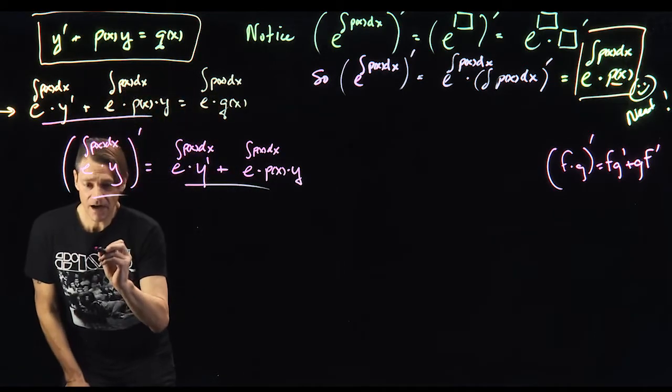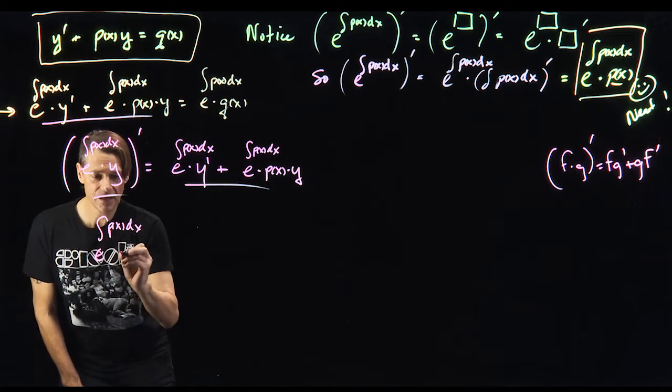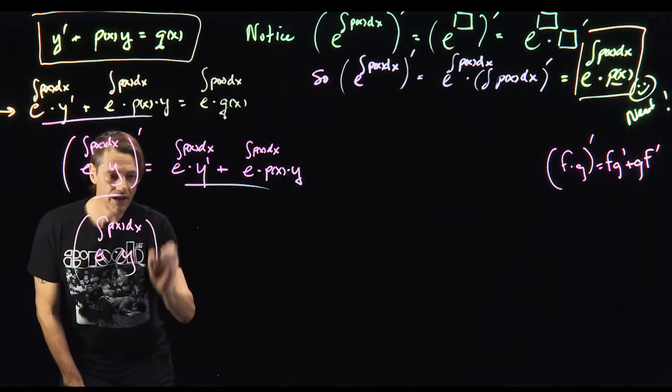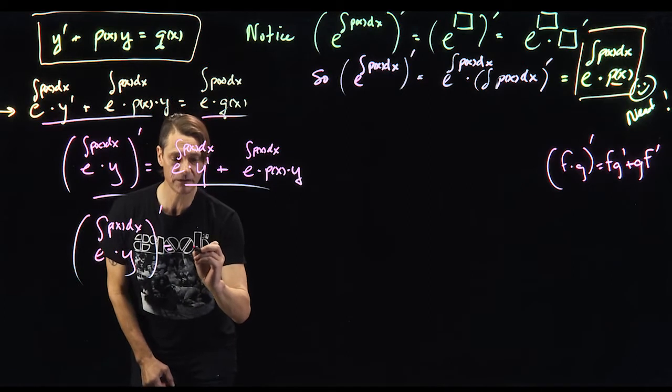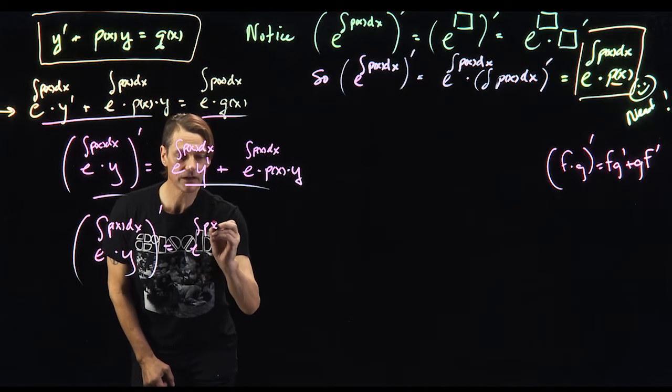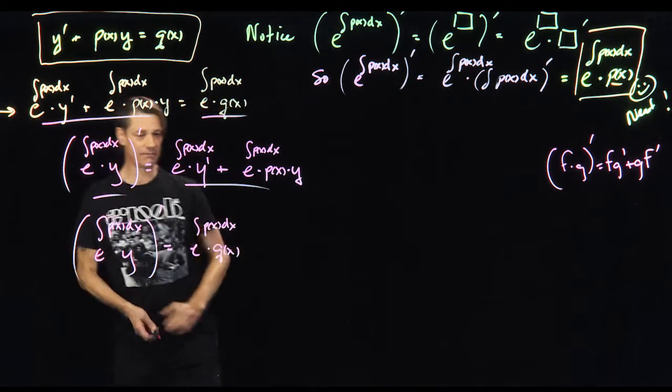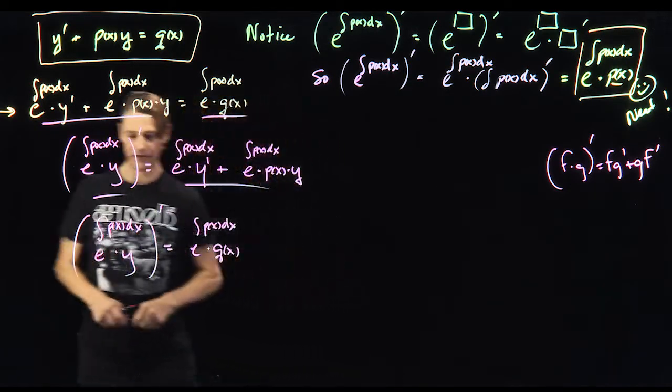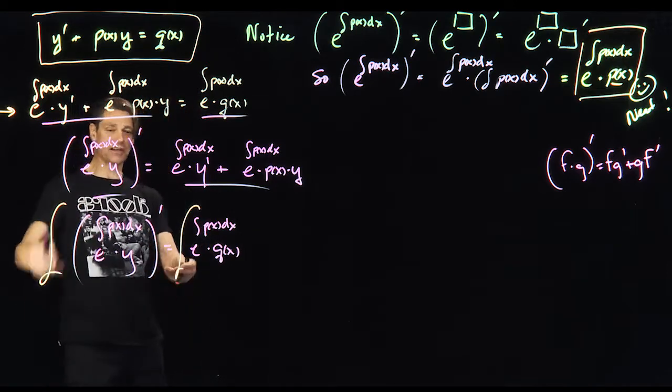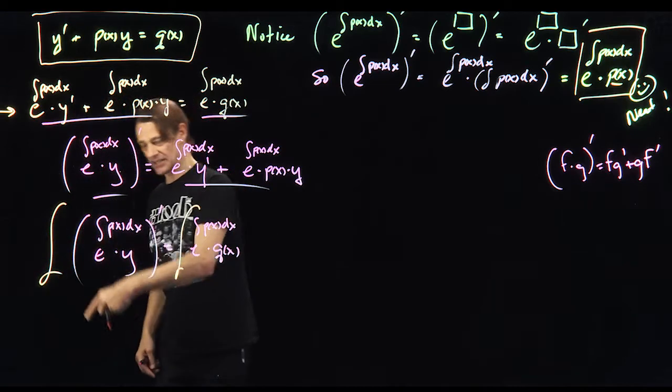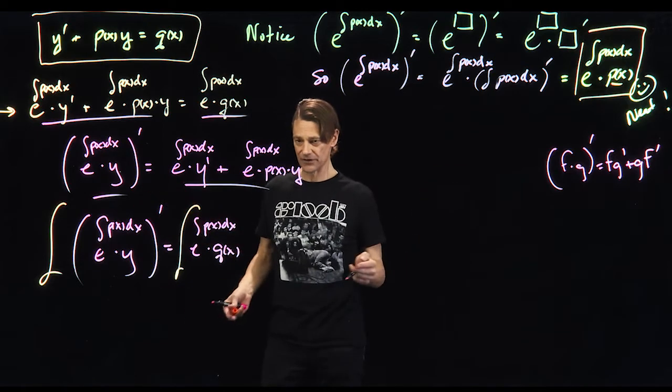So I have this. I know that e to the antiderivative of p of x dx times y, derivative is equal to this, which is equal to this, is equal to e p of x dx times q of x. So now I can do the trick I just did before. Let's take the antiderivative of both sides. And the antiderivative on this side is just going to, so the derivative popped it in or tied it. The antiderivative is going to pop it back out or untie it, however you want to visualize that.